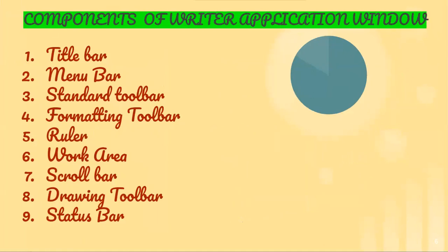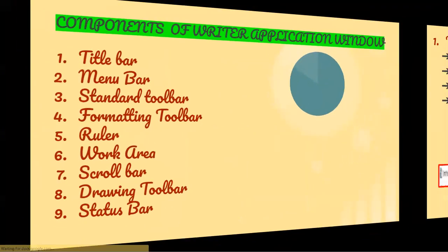What are the different components of the Writer application window? Title bar, menu bar, standard toolbar, formatting toolbar, ruler, work area, scroll bar, drawing toolbar, status bar. Let us discuss them one by one in detail.